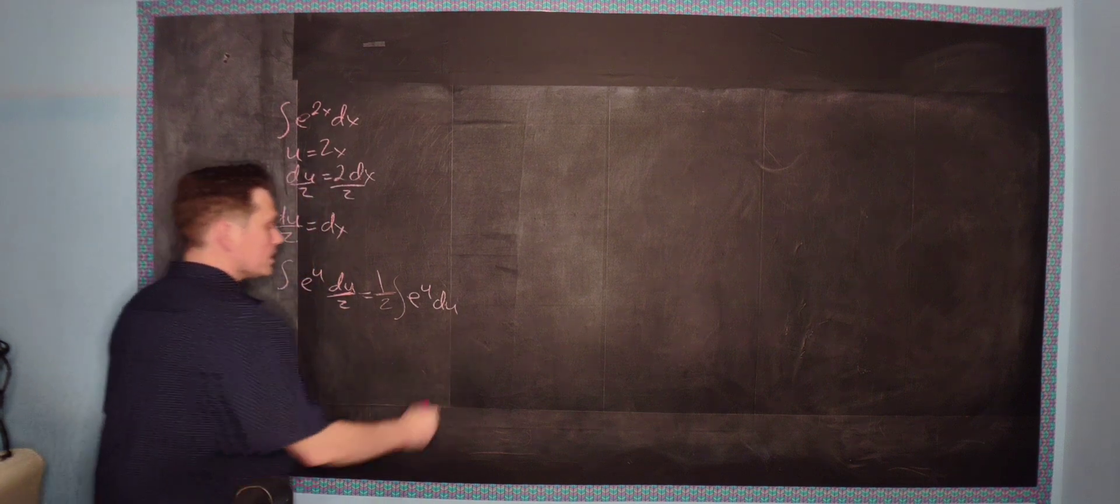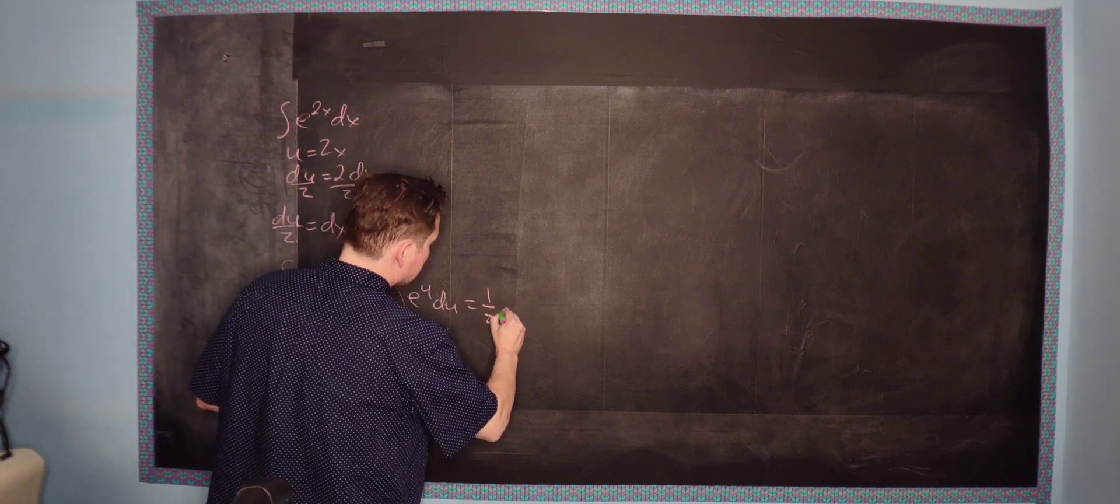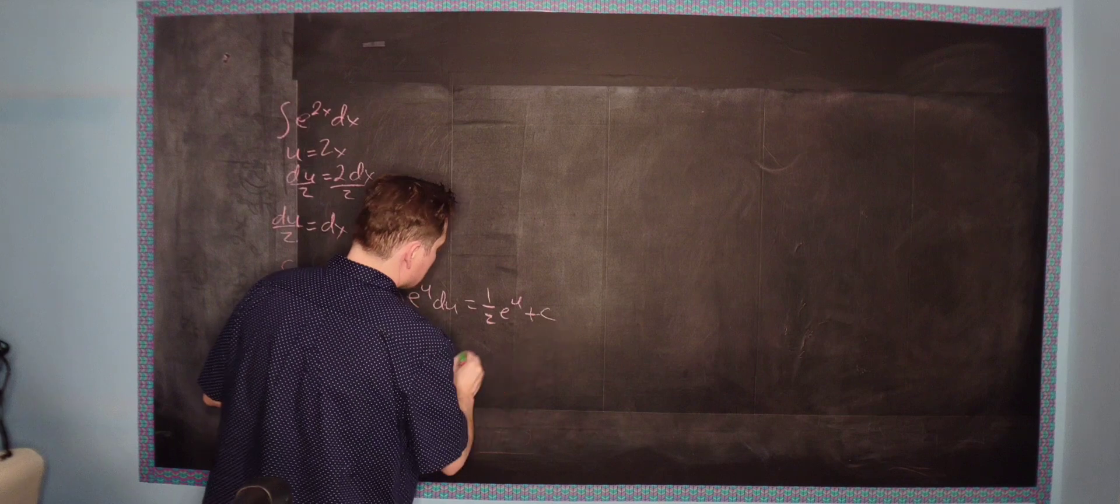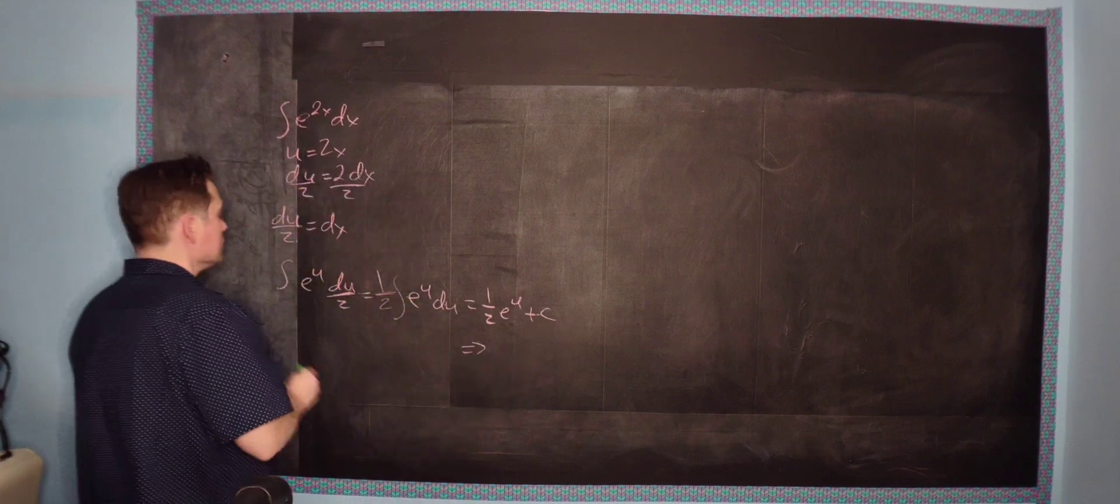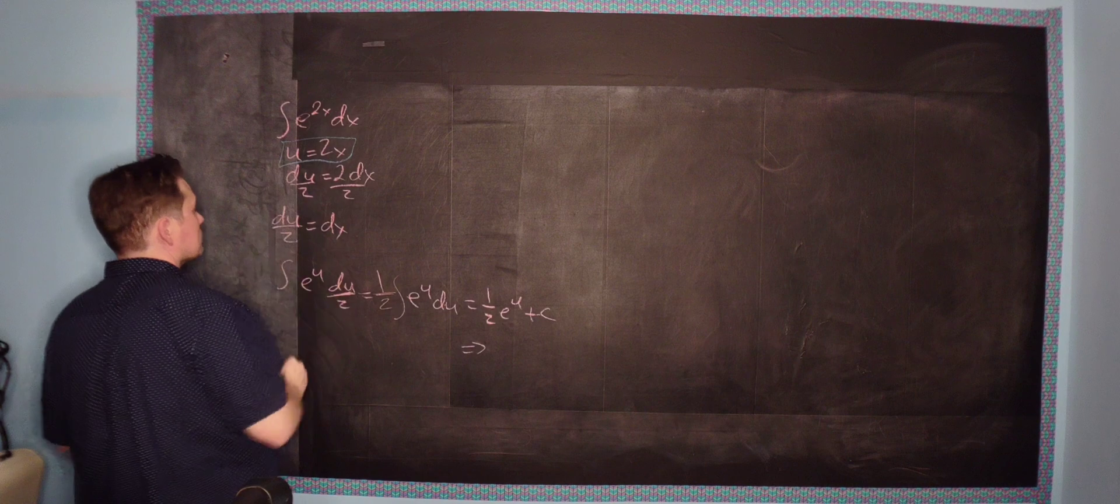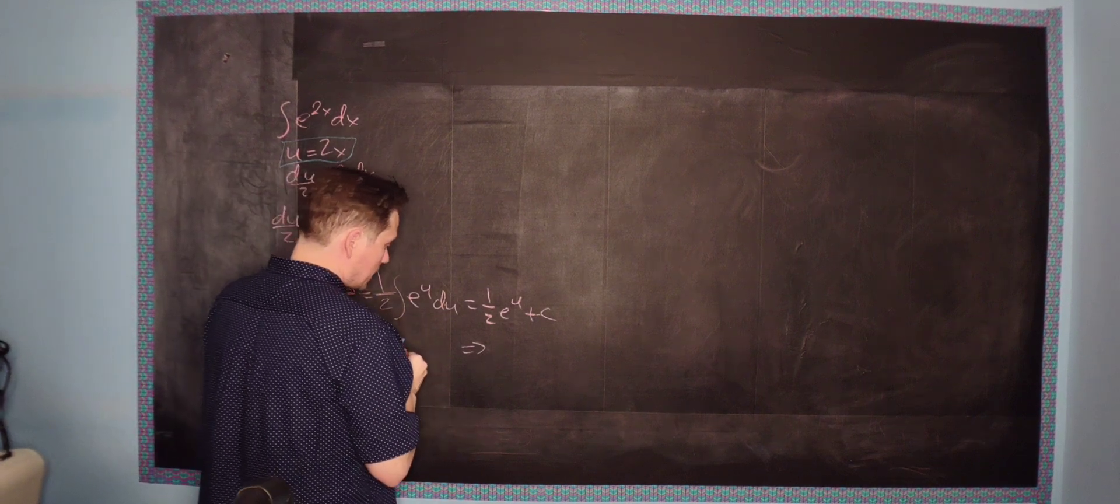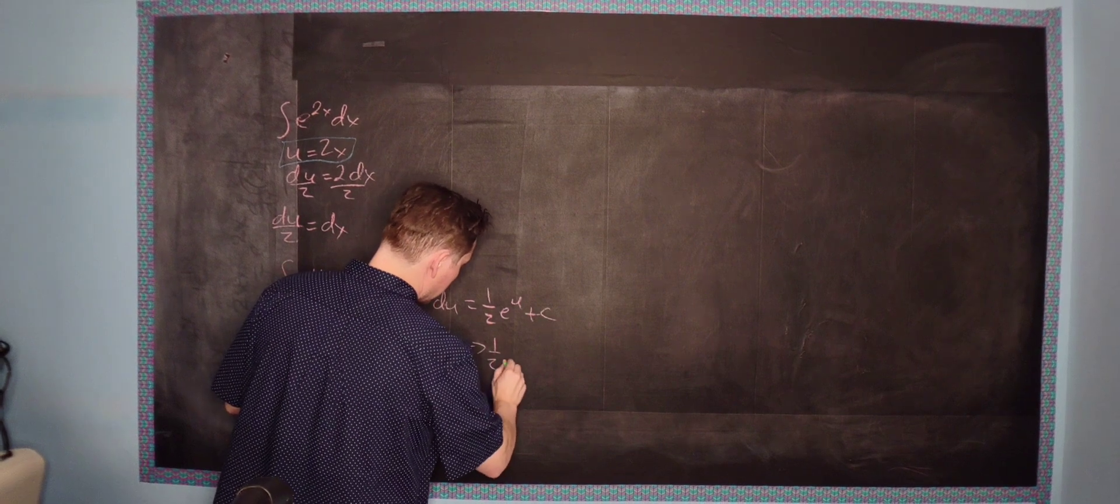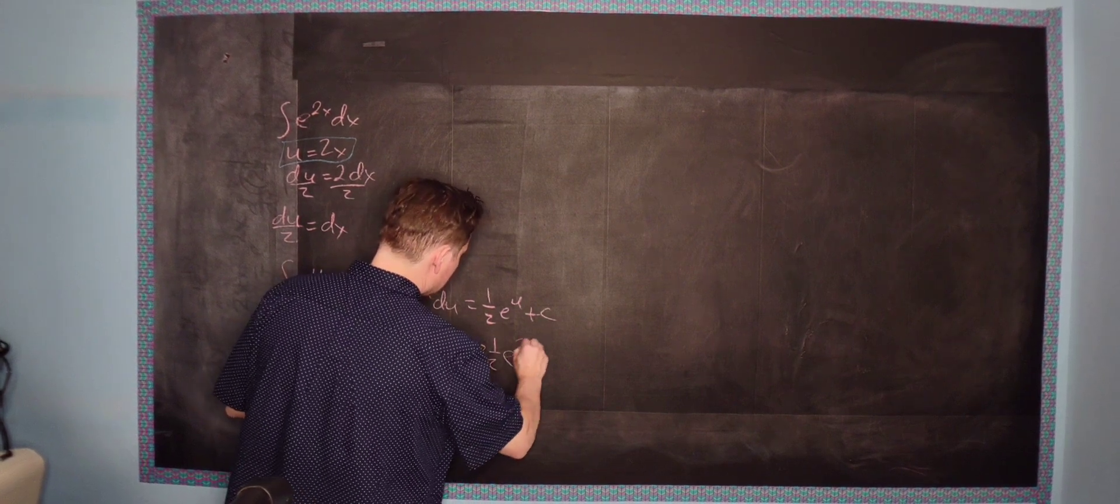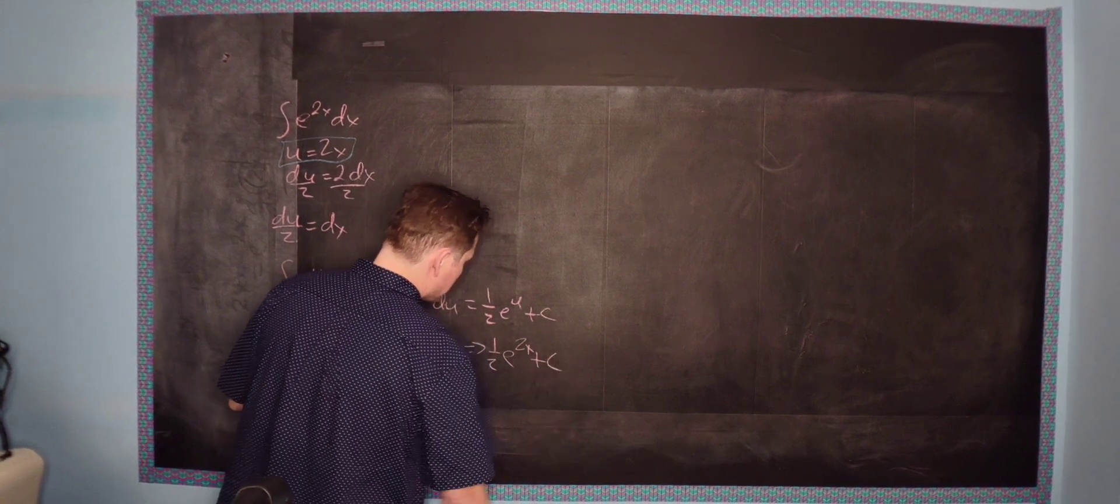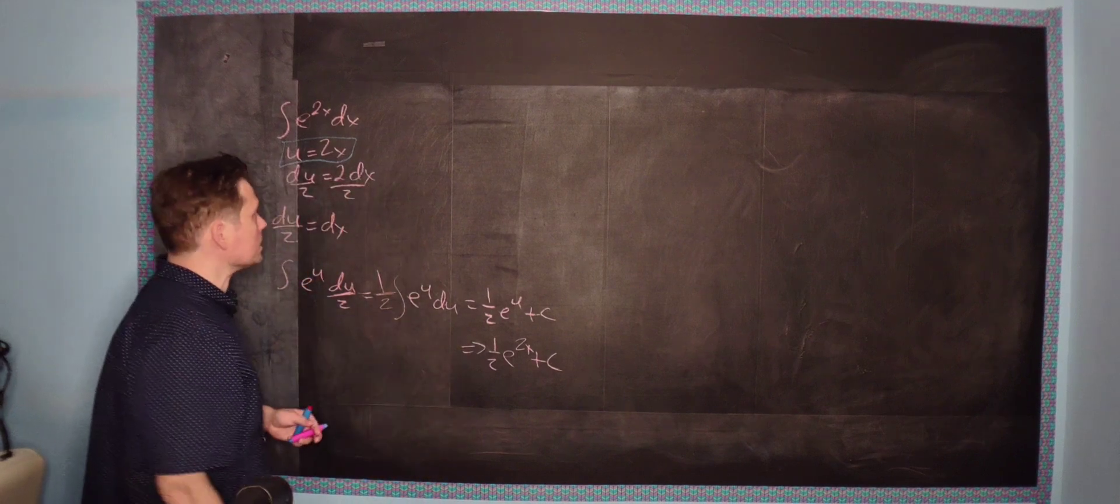And then you finish this from here, so it's going to be 1 half e to the u plus c. But remember that u is defined as 2x right here, so it becomes, therefore, at the very end, 1 half e to the 2x plus c. And that's it, so this is anti-differentiated.